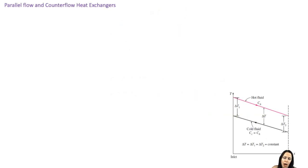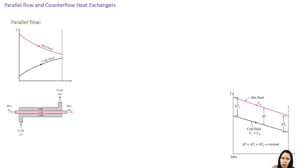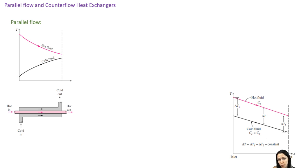Now let's look at some general concepts for parallel and counter flow heat exchangers. In a parallel flow heat exchanger, the hot and cold streams enter at the same end. This results in the highest heat transfer rate due to the highest temperature difference between the two fluids at the inlet. As the fluids flow through, the hot fluid cools off, the cold fluid heats up, and they come closer to the same temperature at the outlet.